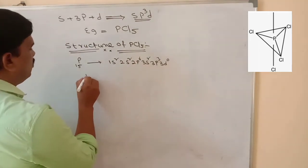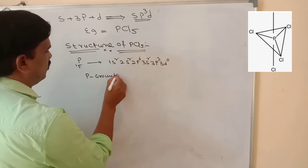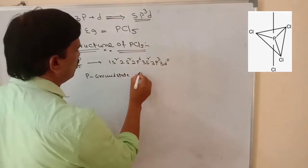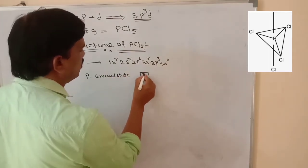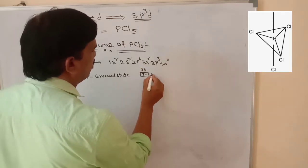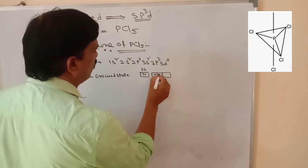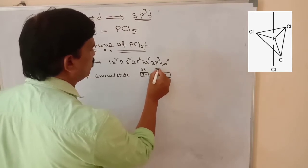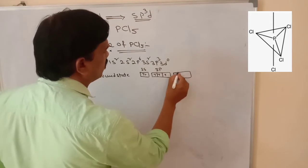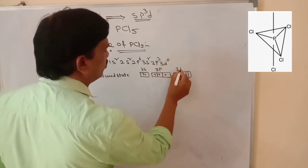This is the phosphorus ground state electronic configuration. In the ground state, the 3s orbital has 2 electrons, and in 3p there are 3 electrons — each orbital gives 1 electron according to Hund's principle. In 3d there are 5 subshells, and 3d has 0 electrons.